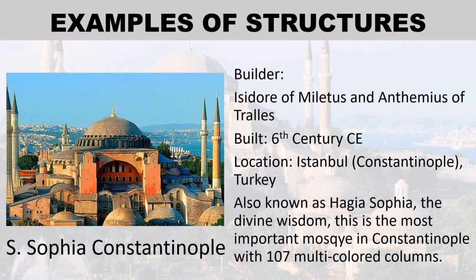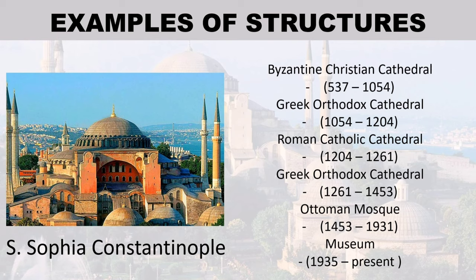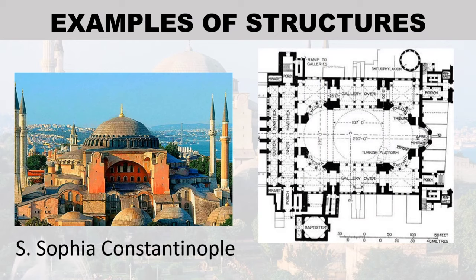Example of structures: Hagia Sophia, Constantinople — built by Isidore of Miletus and Anthemius of Tralles, approximately in the 6th century CE, located in Istanbul, Turkey. Known as the Divine Wisdom, it is the most important mosque in Constantinople with 107 multicolored columns. It served as a Byzantine Christian Cathedral from 537 to 1054, a Greek Orthodox Cathedral from 1054 to 1204, a Roman Catholic Cathedral from 1204 to 1261, again a Greek Orthodox Cathedral from 1261 to 1453, an Ottoman Mosque from 1453 to 1931, and a museum from 1935 to the present.